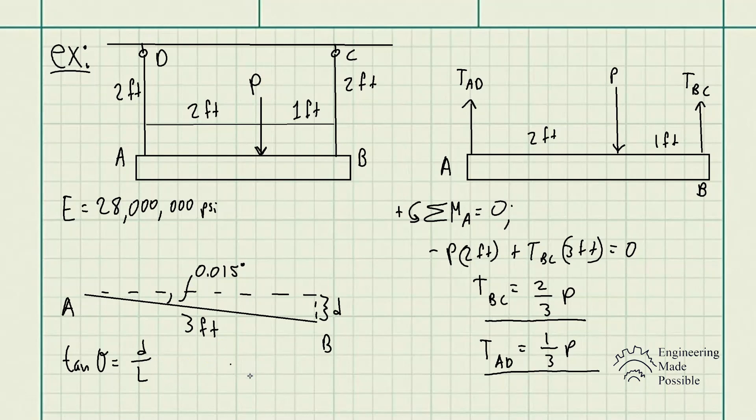So d is equal to L times tangent theta, and we know tangent theta is 0.015 degrees. Plugging in for d gives us 0.0007850 feet, and this is another bit of information that we're going to be using to solve this problem.